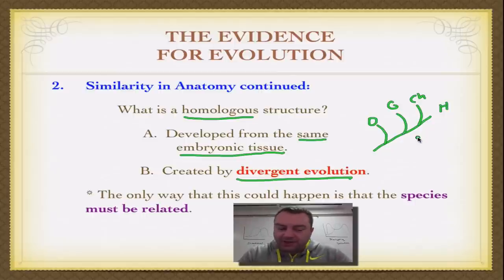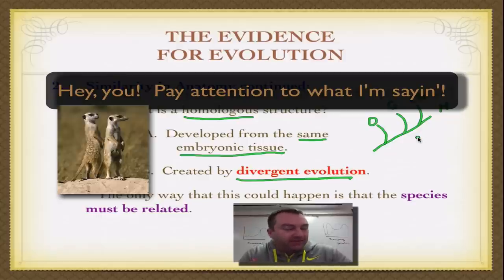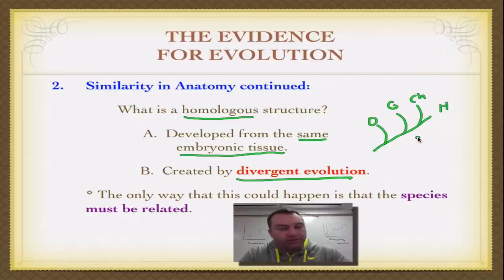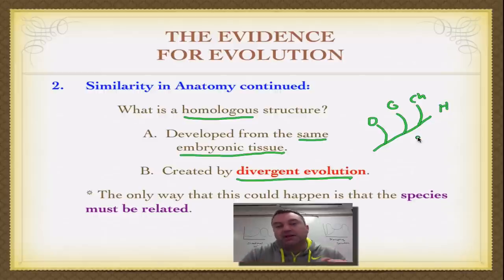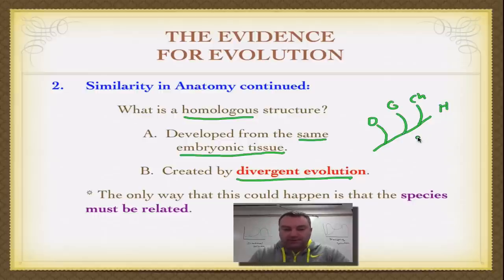Homologous structures have the same anatomical structure, which implies they have the same types of genes that created those structures. The only way two different species can have extremely similar or identical genes is if they are related. Think of it like your own family — your siblings and parents are going to have most genes similar to yours because you are most closely related to them.